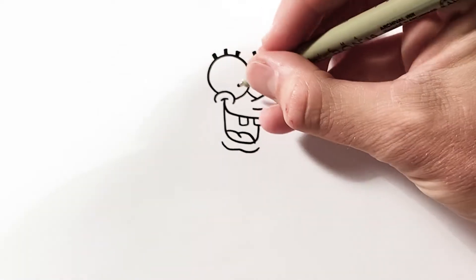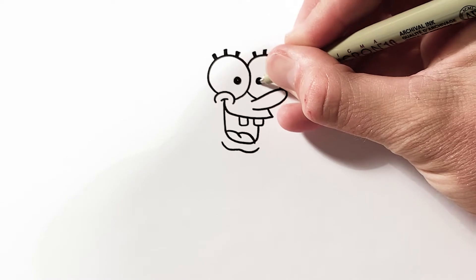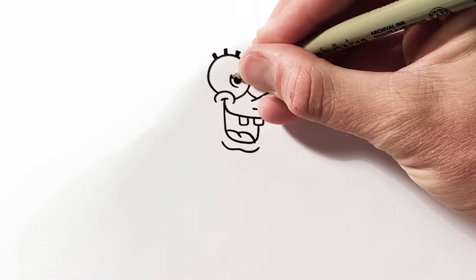I find it's best to draw pupils first to really give a sense of the character and then draw the irises around the pupils.